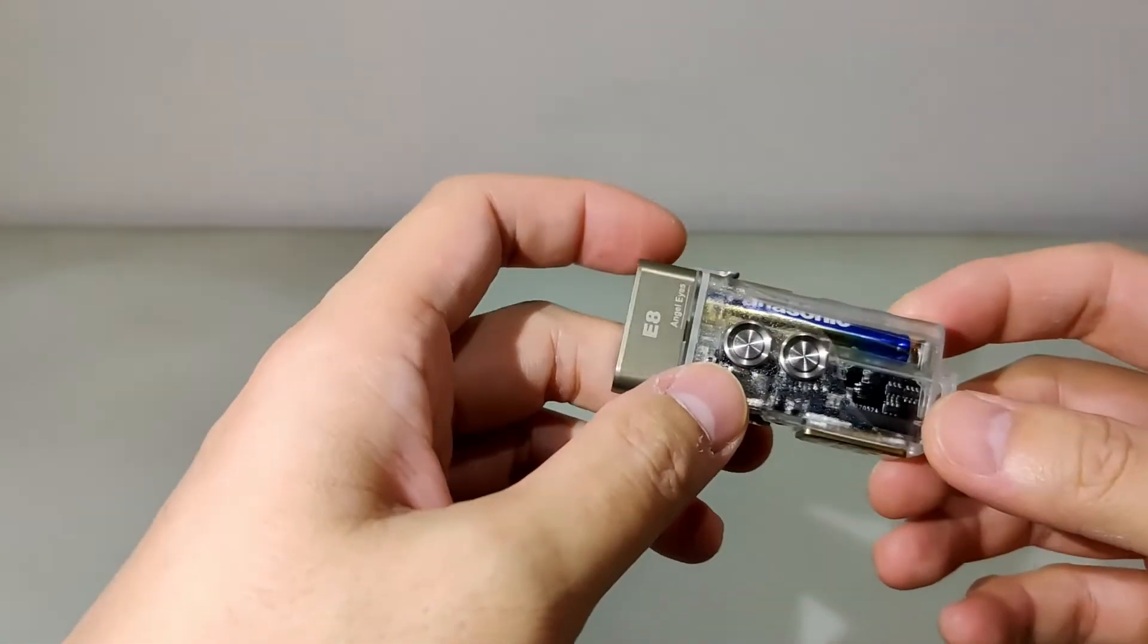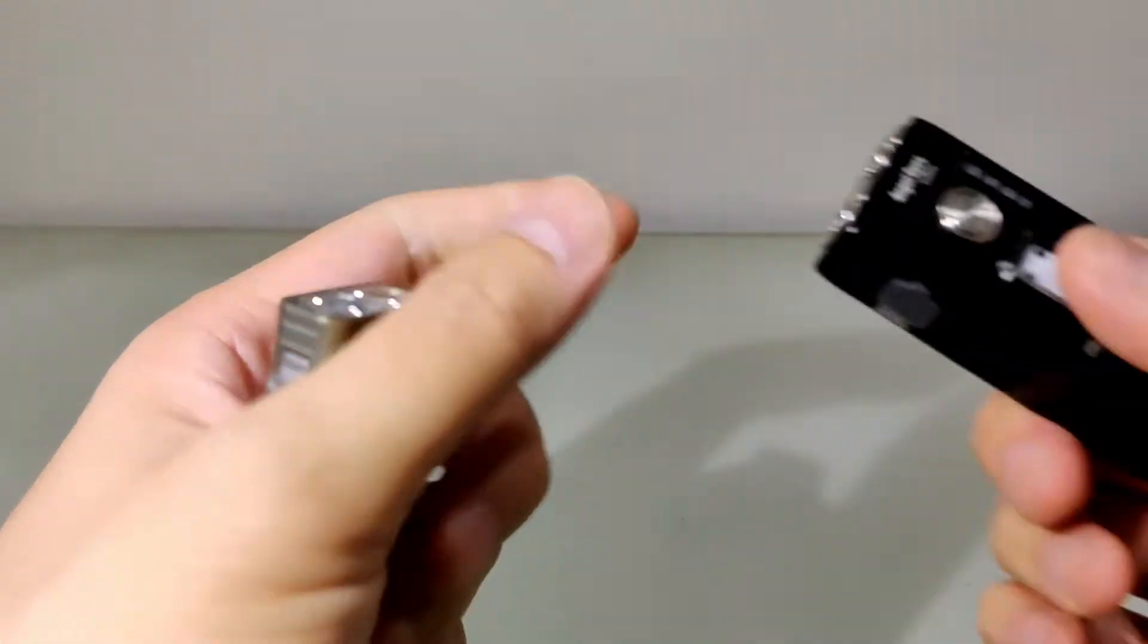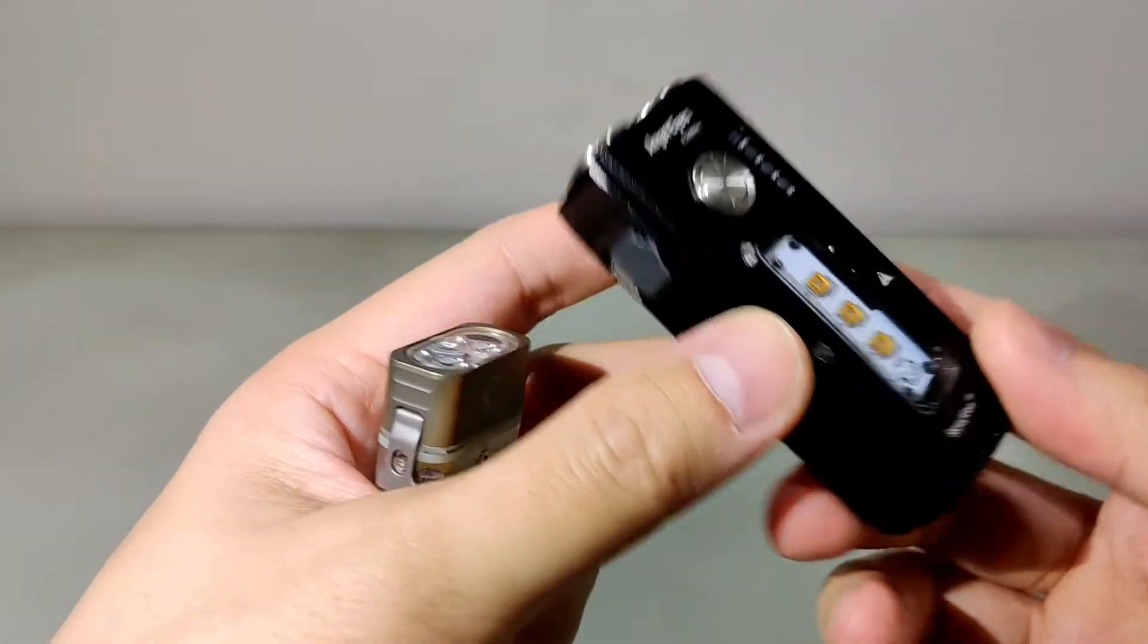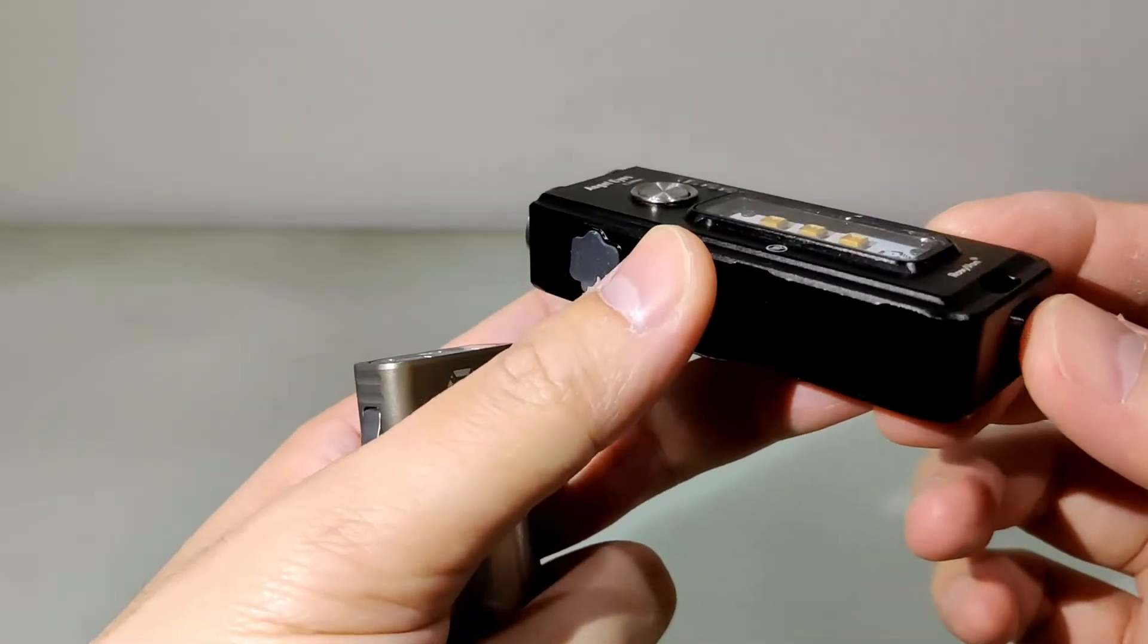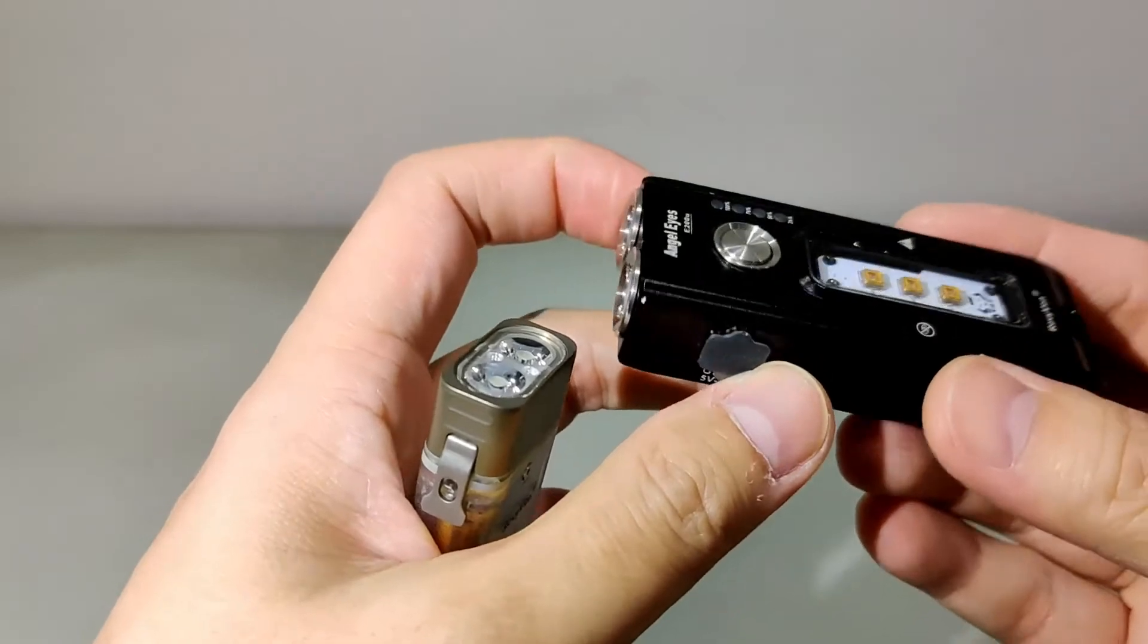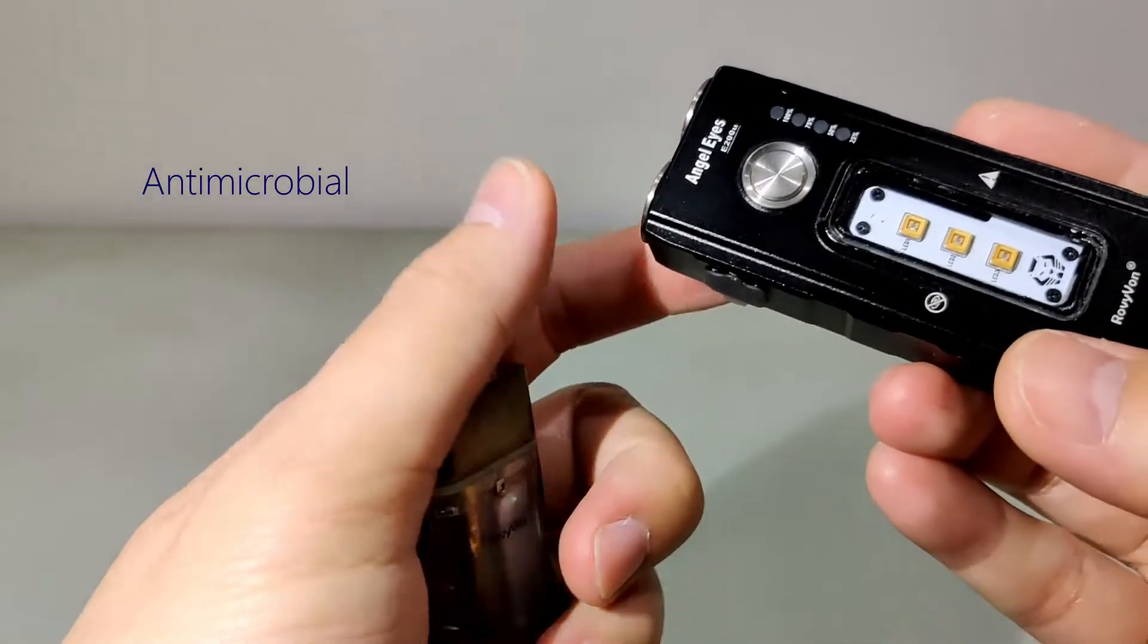This is not my first angel eyes and not my first dual button Rovivon. There is this E200U, which I had reviewed before as well. While it doesn't have the clear plastic body and uses a metal one instead, it still has side LEDs. But the option I have is UVC, which is kind of useful during this pandemic time.